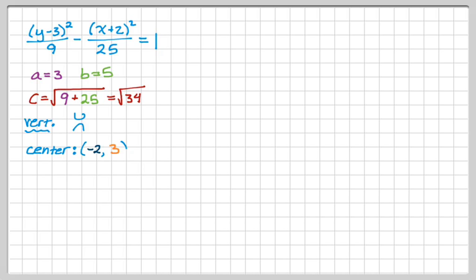So the center is at negative 2, 3. So a huge mistake that a lot of people make is, if y comes first, y still goes with k, where the center is h, k, and x always goes with h. So the center here is negative 2, 3, even though the 3 seems to come first. So I'm going to plot the center, so that's negative 2, 3.